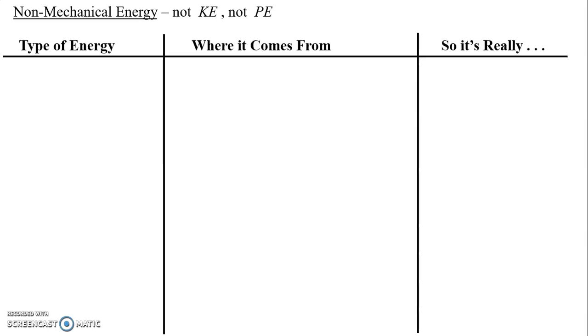If you're not quite sure, let's think. Mechanical energy is the sum of kinetic energy and all forms of potential energy. So what's non-mechanical energy? It's just not those things — it's not kinetic energy, and it's not potential energy. There are plenty of other forms of energy. Right here in our notes, we're going to create a chart listing all different types of non-mechanical energies.